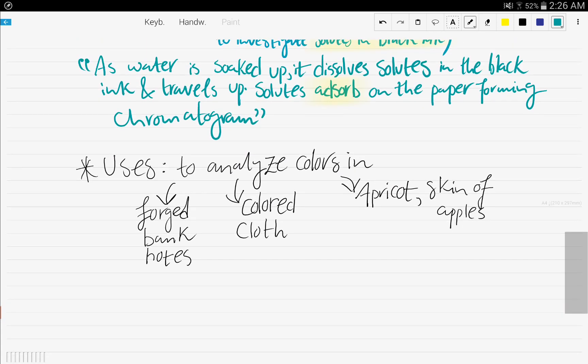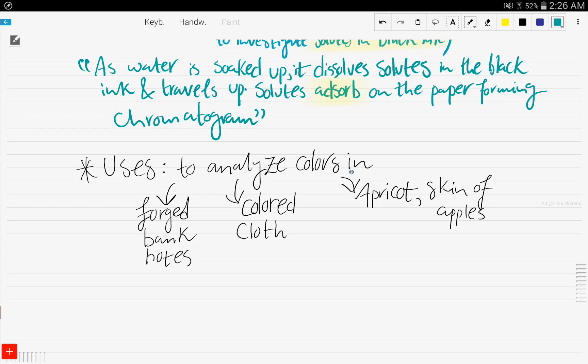What are some of the uses of chromatography? It's used to analyze colors in forged banknotes, so it really has some real-life uses. And you can analyze the colors in a colored cloth. You can analyze the colors in an apricot or a skin of apples or oranges or lemon.